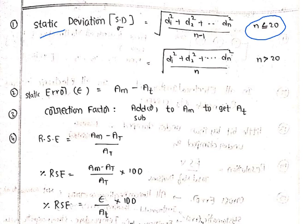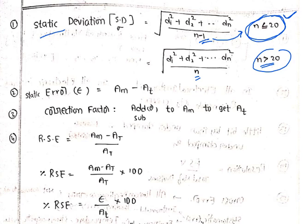When n ≤ 20, we take n − 1 in the denominator. When n > 20, we take n. You can remember this by noting that the less-than-or-equal symbol has a minus sign in it. So the static deviation formula is: root over (d1² + d2² + ... + dn²) / (n − 1) for n ≤ 20, and divided by n for n > 20.